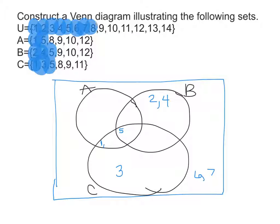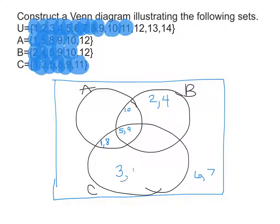The number eight is in A and C, no B — so we need where A and C overlap, but not B. The number nine is in A, B, and C — all three — so we'll put that right in the middle. The number ten is in A and B, not C — so we need where A and B overlap but not touching C. The number eleven is only in C. The number twelve is in A and B. The numbers thirteen and fourteen are not in A, B, or C, so they will go on the outside.